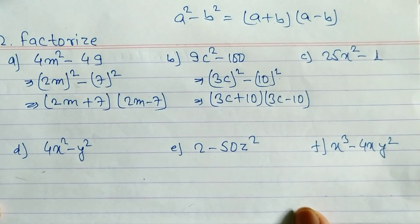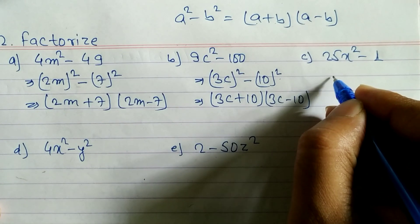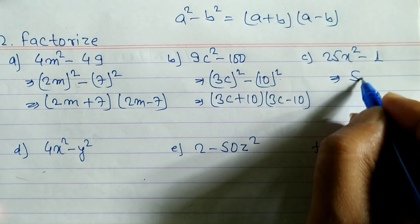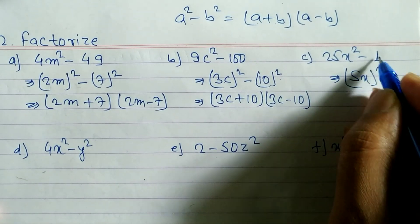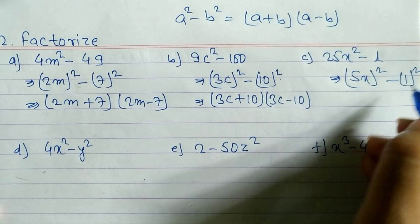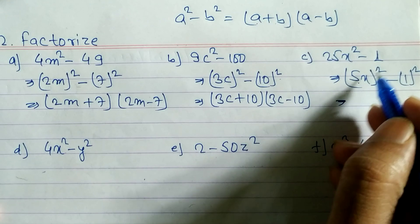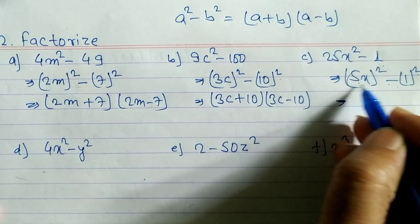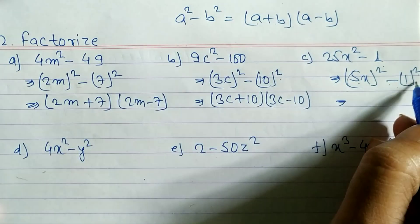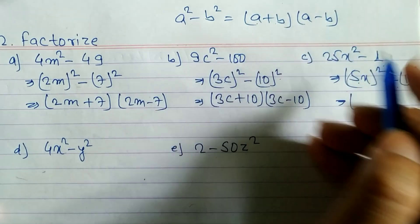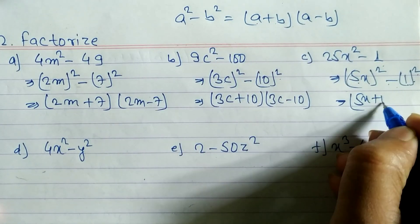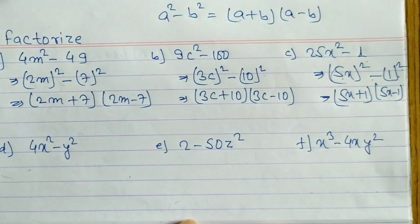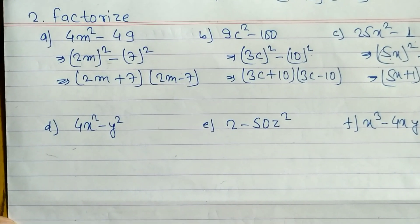One important point: when factorizing, if there is a common factor, take it out first, then apply the formula. For problem c: 25x² - 1. The square root of 25 is 5, so we write (5x)², and 1 = 1². With a = 5x and b = 1, the answer is (5x + 1)(5x - 1).